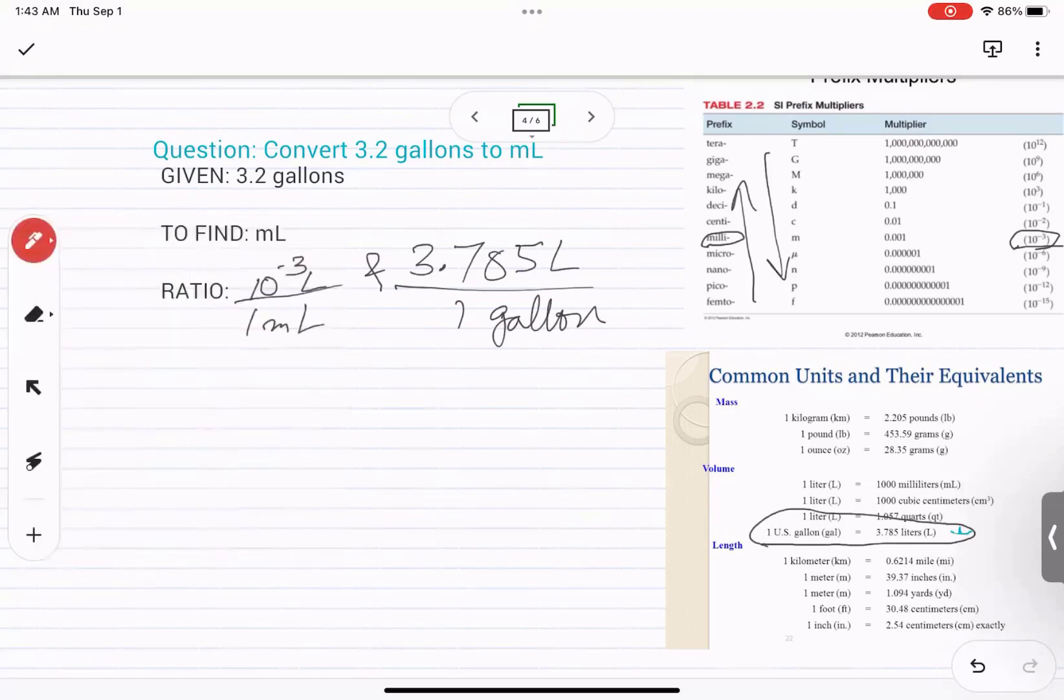So again, let's look at what we are going to plan. We have gallon. And from gallon, we are going to liter. And from liter, we are going to milliliter.